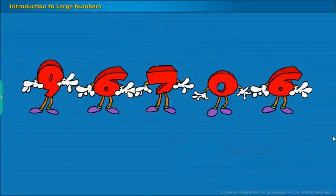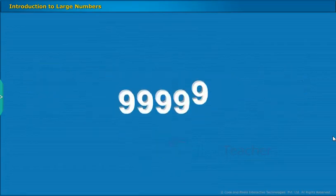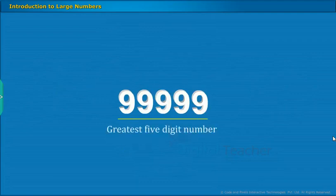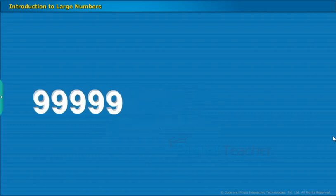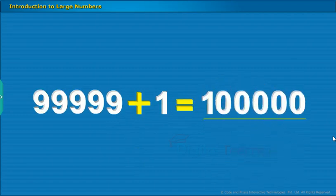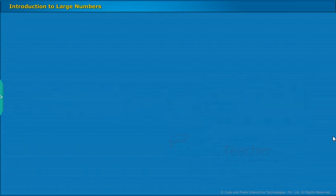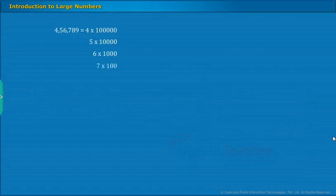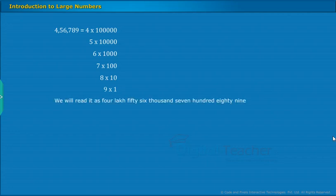Introduction to Large Numbers: The greatest 5-digit number, what we all know, is 99,999. Now, just add the number 1 to it. Then we will obtain the least 6-digit number, that is 1 lakh. Let us take the number 456789. Its expanded form is as shown. We will read it as 4,56,789.